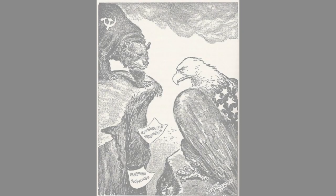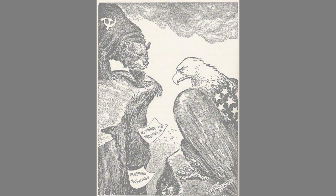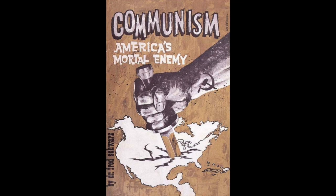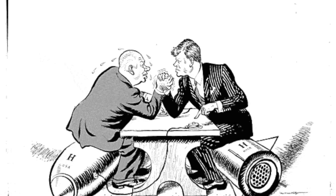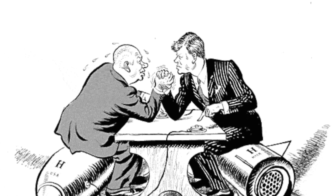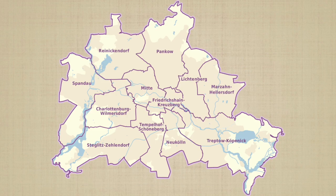Meanwhile, tensions and mistrust built up between the United States of America and the Soviet Union. The Americans disagreed with the Soviets' ideas of communism and their plans of expansion. These tensions would eventually lead to the Cold War, a capitalist-communist struggle between the US and the Soviet Union. The Cold War was expressed in a variety of places, one of those places being Berlin, Germany.